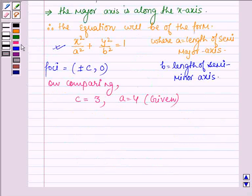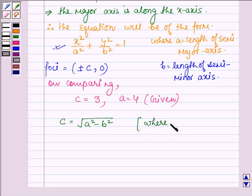And as we know, c, which is the distance of focus from the center, is given by √(a² - b²).